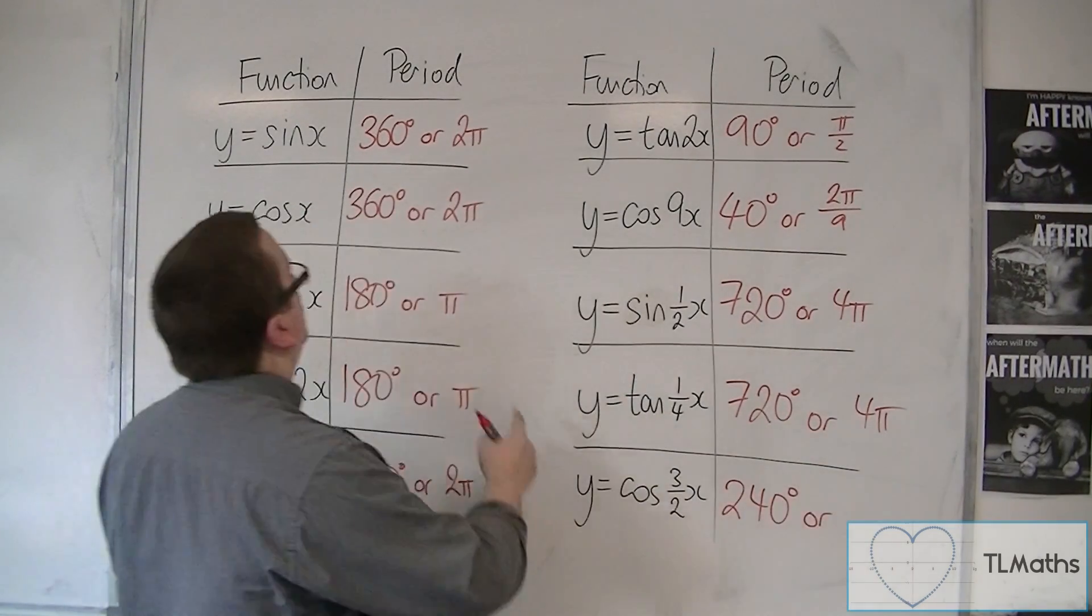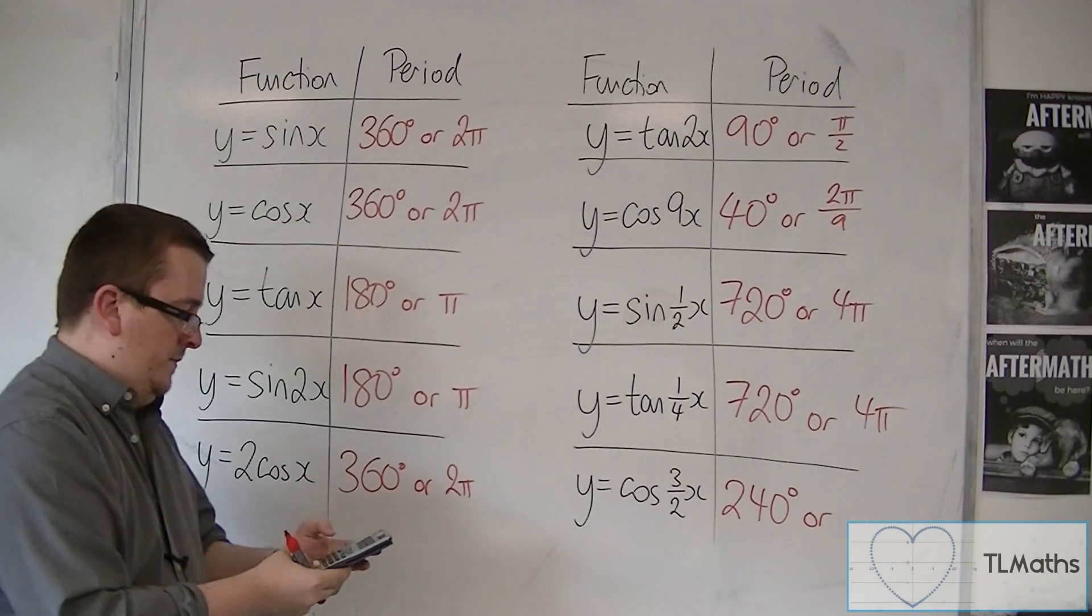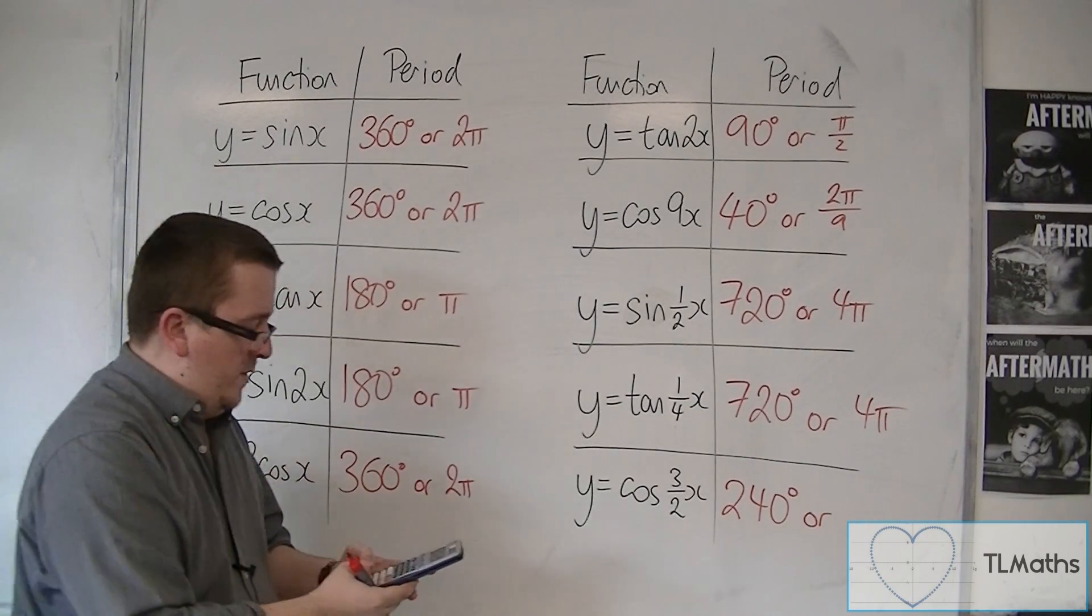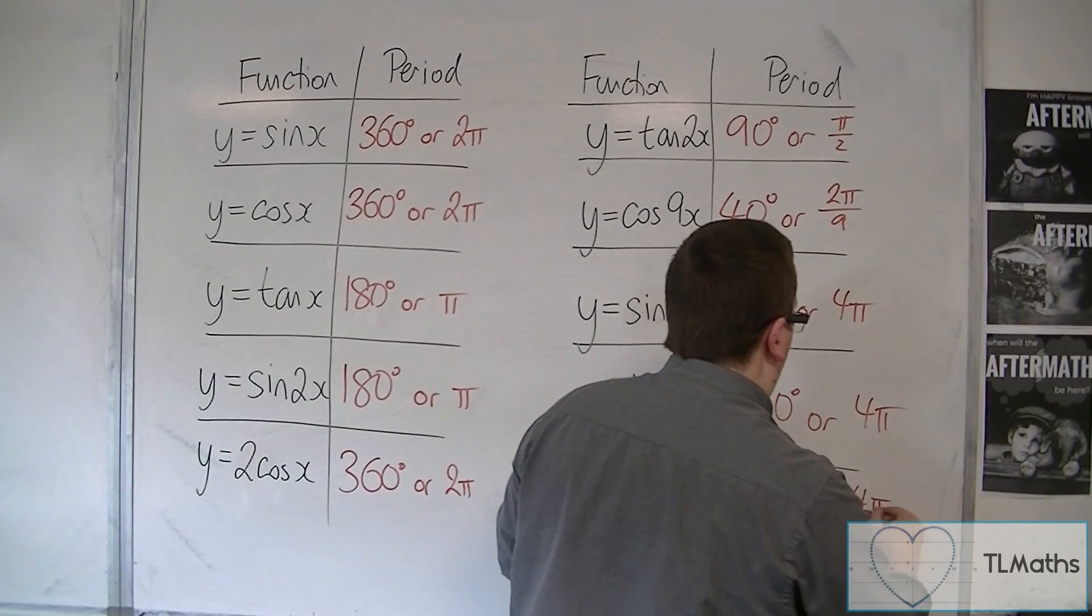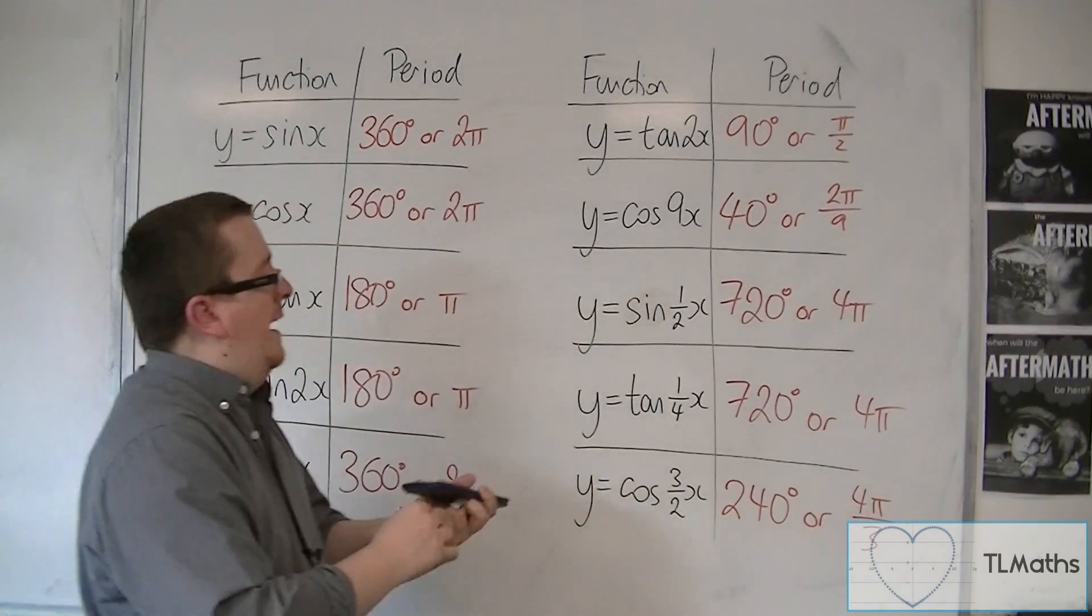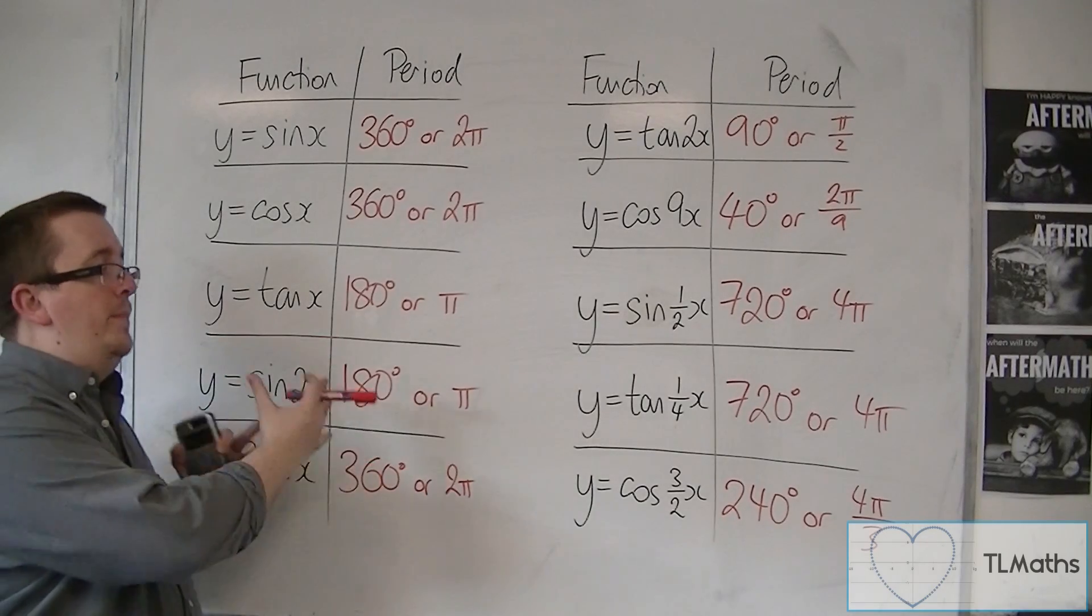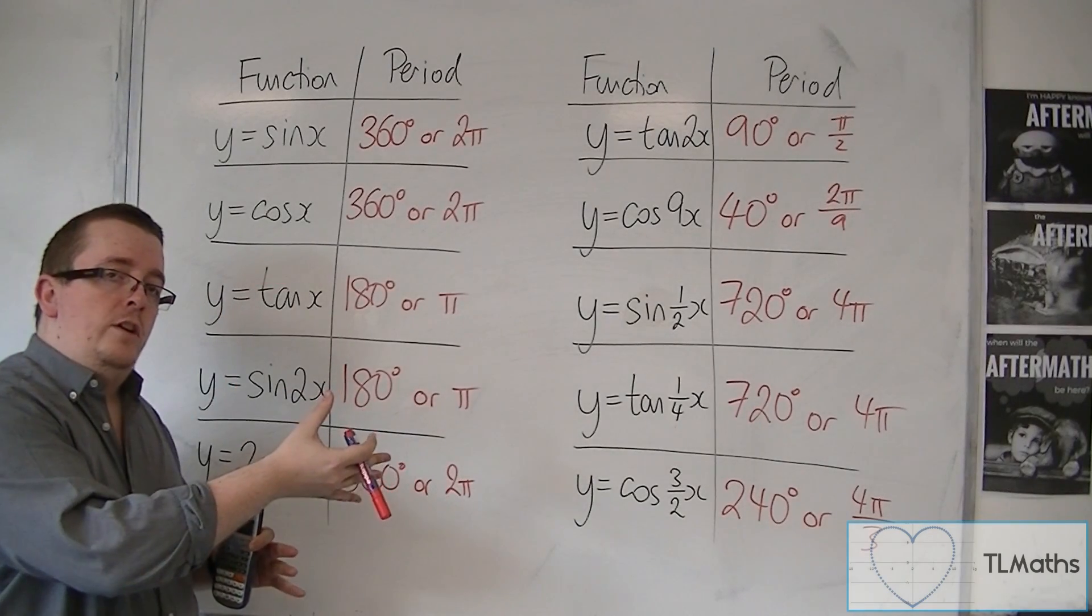Or you've got 2 pi divided by 3 halves, which is 4 pi over 3. And that's how we can determine the period of the function that we're looking at.